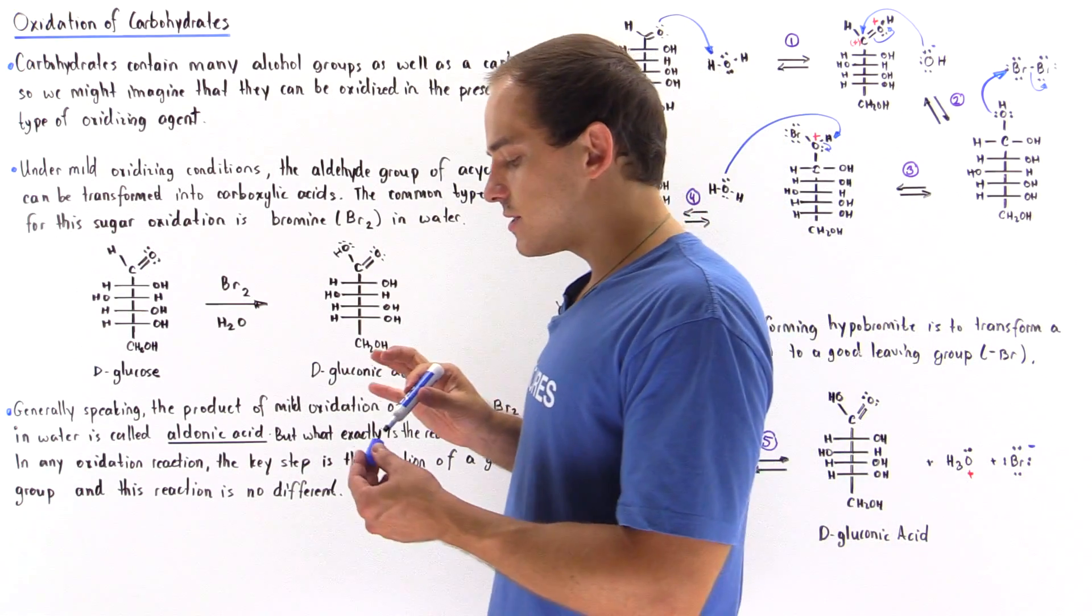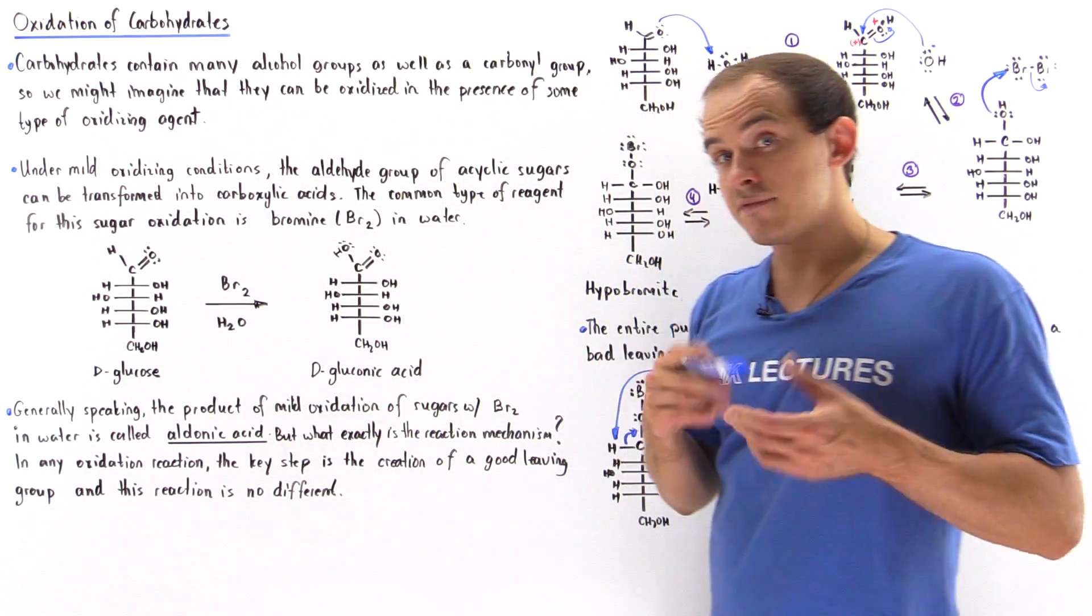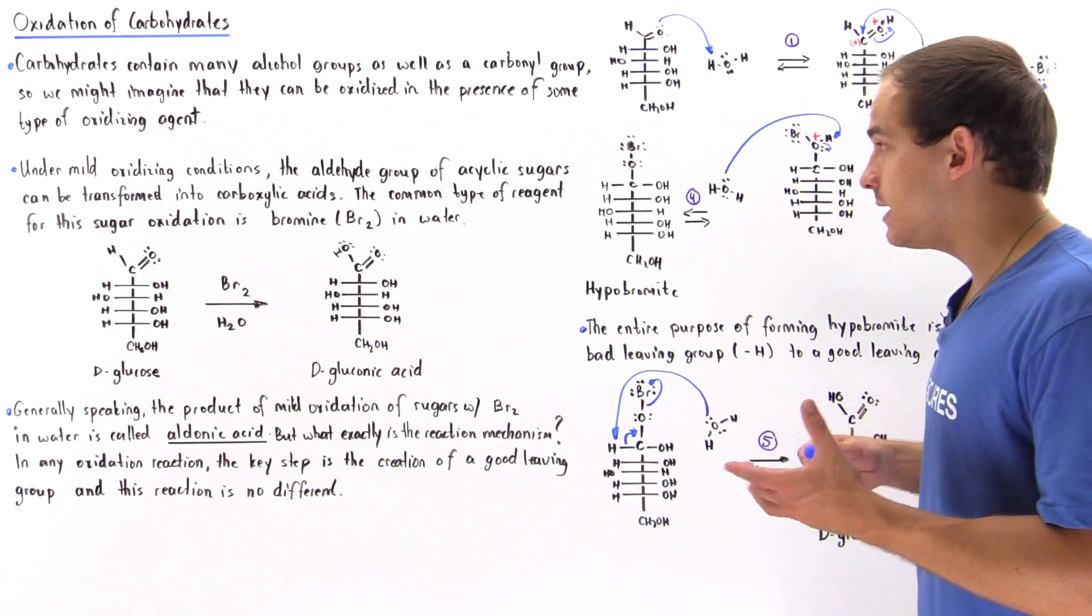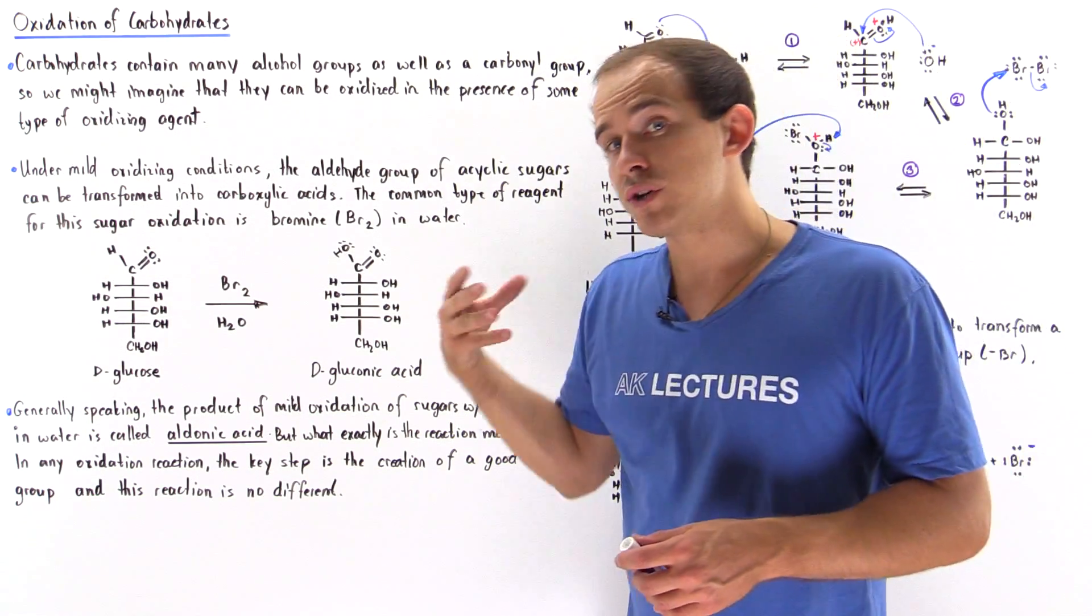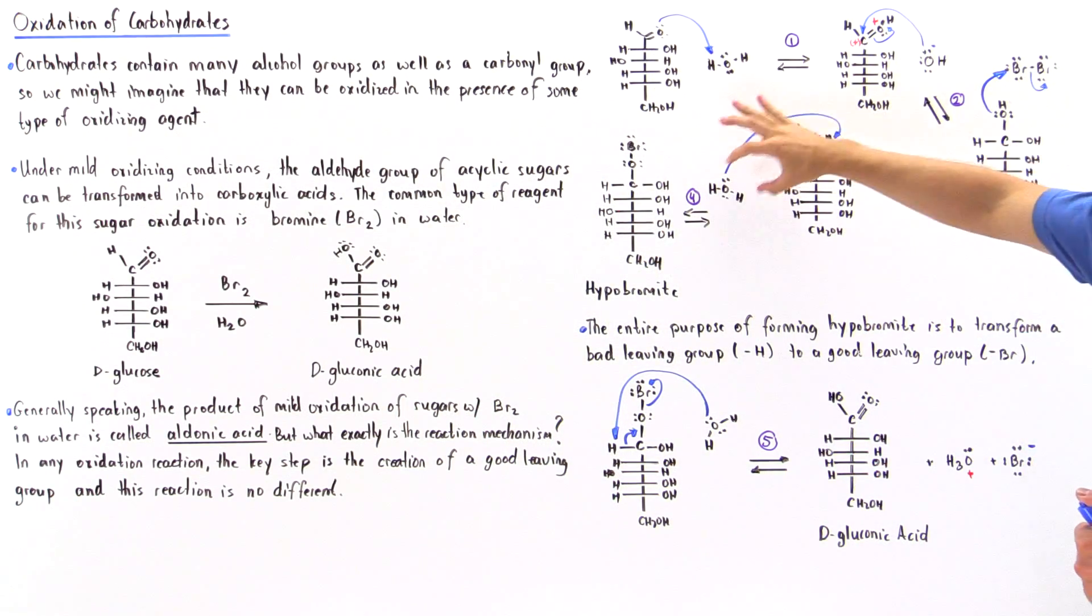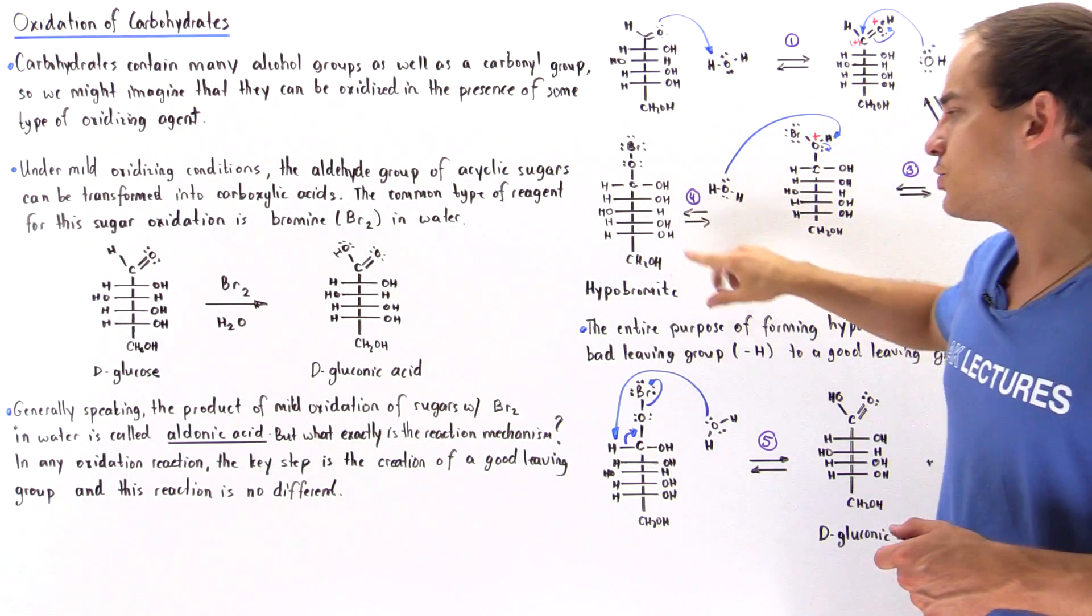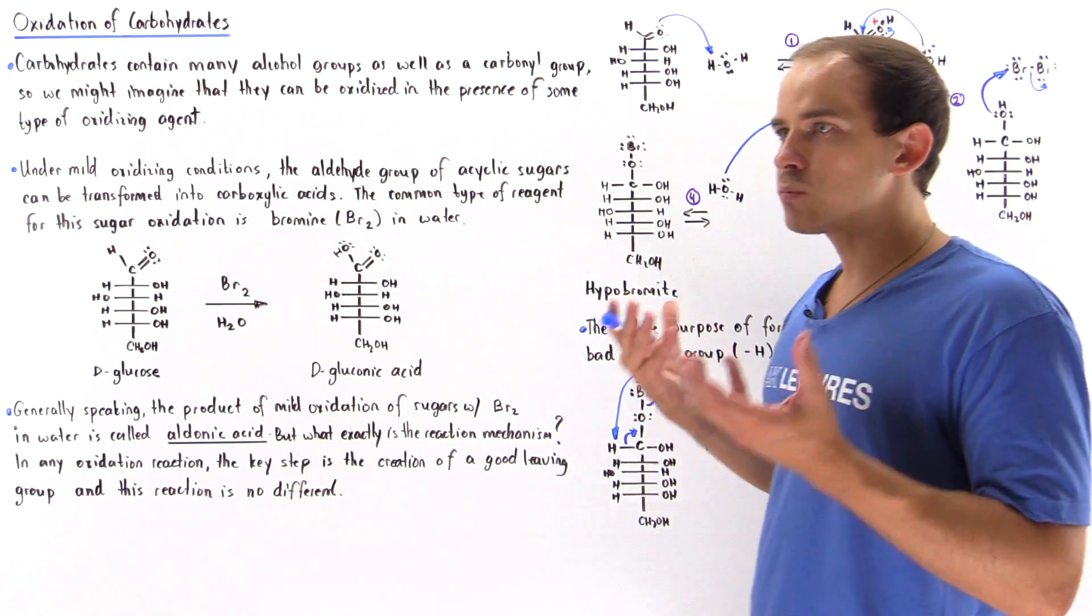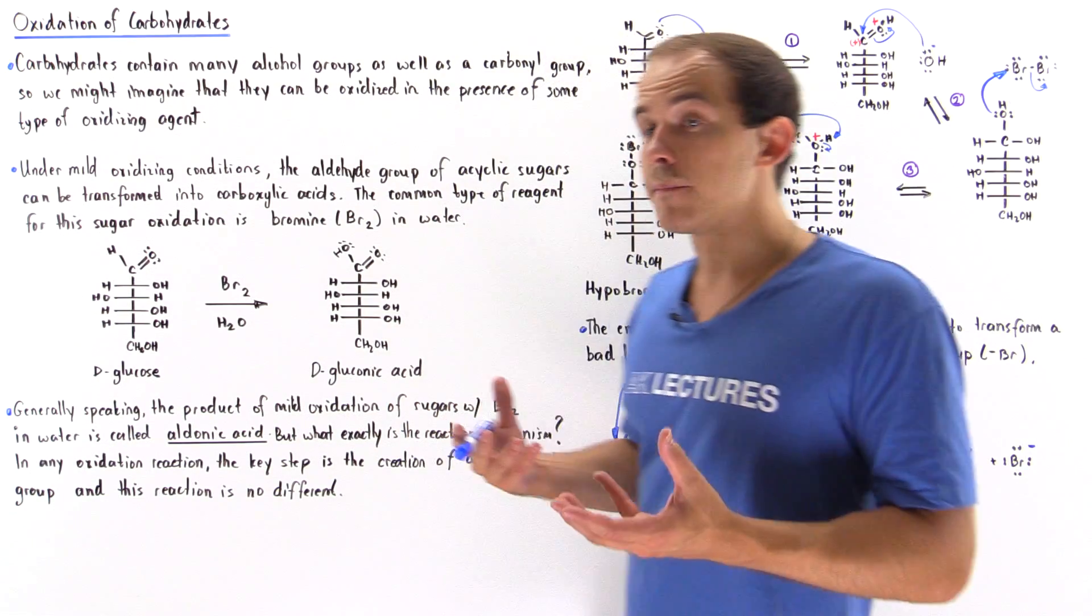Now whenever we have a positive charge on an electronegative atom, such as our oxygen, that is not a very stabilizing phenomenon. So that means in step four, we're going to want to remove that charge. And the way that we remove it is a water molecule approaches and grabs this H atom, removes it.